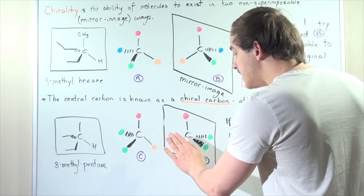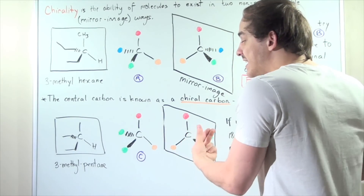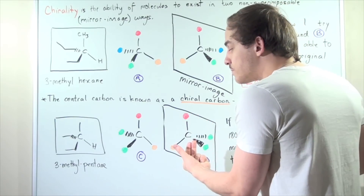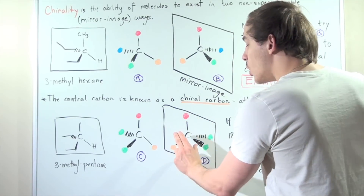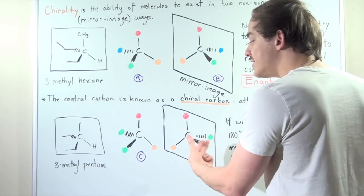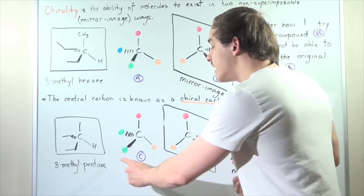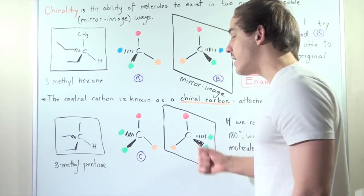If I take the mirror image and rotate it 180 degrees, I will produce back my compound C, confirming that this molecule is achiral — a mirror image exists that is superimposable on the original.